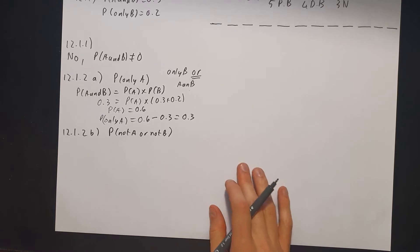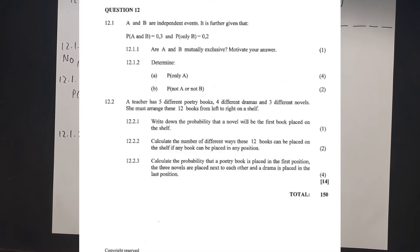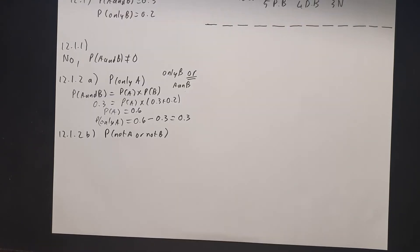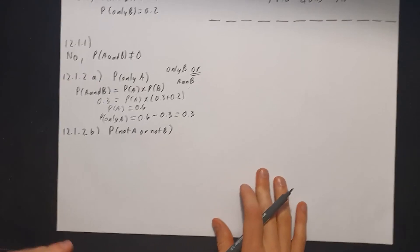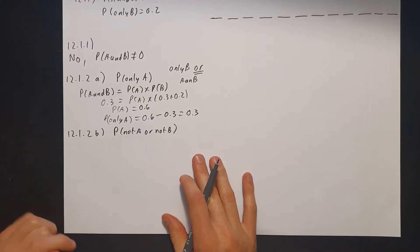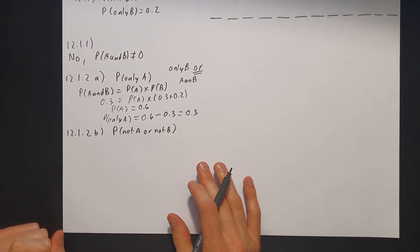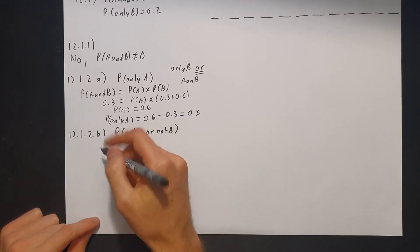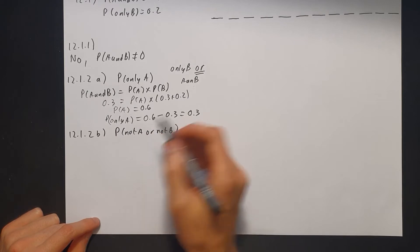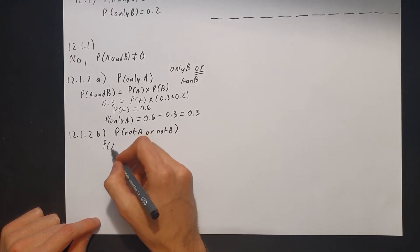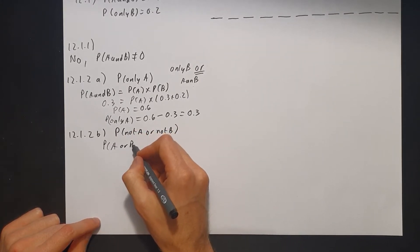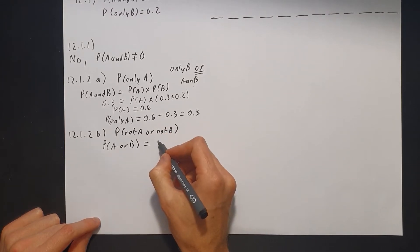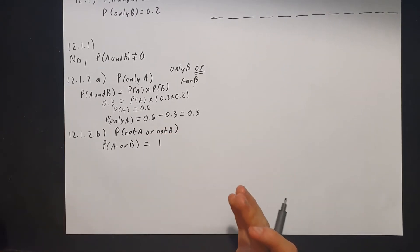Then 12.1.2 asks for the probability of not A or not B. Not A or not B — let's think about the probability of A or B happening. The total probability of A or B must equal 1.